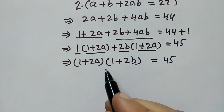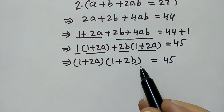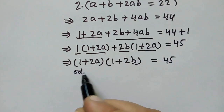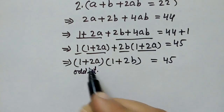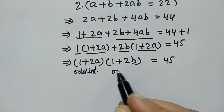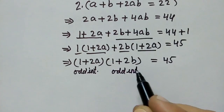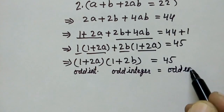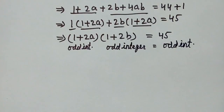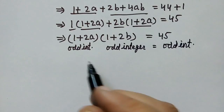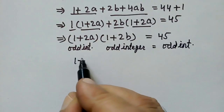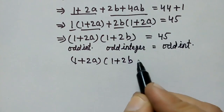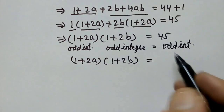Since a and b are positive integers, 1 plus 2a will be an odd integer, and 1 plus 2b will also be an odd integer. So we can say that (1 plus 2a)(1 plus 2b) equals 45.